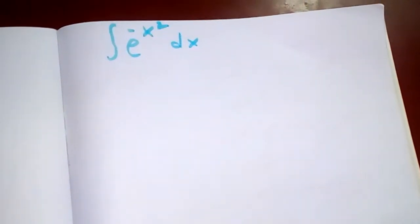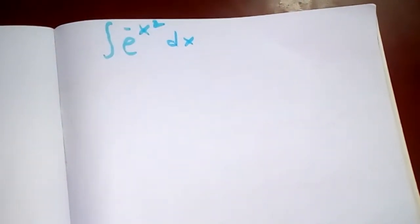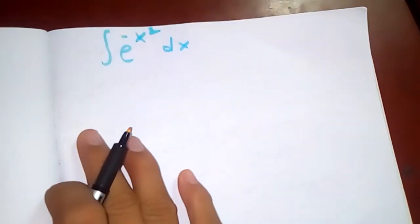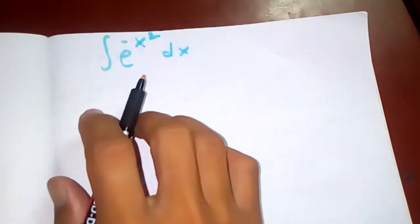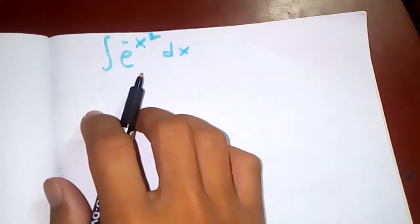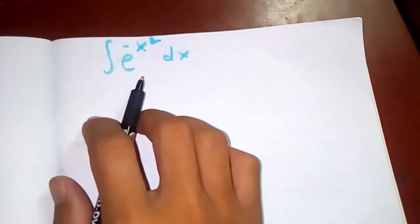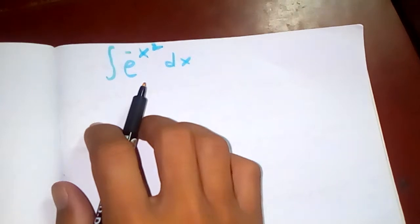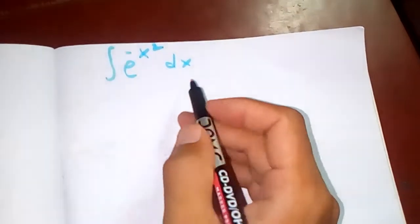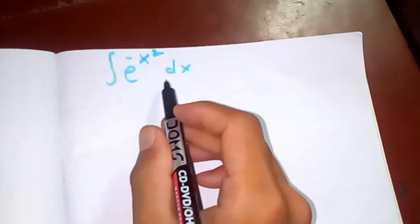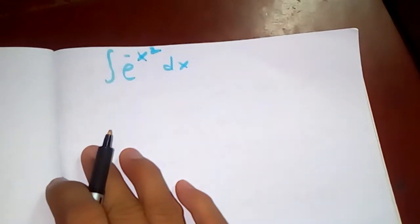Thanks for watching my video today. Let us evaluate this integral: how to evaluate the integral of e to the negative x squared dx. This integral is almost impossible to evaluate in a normal way.